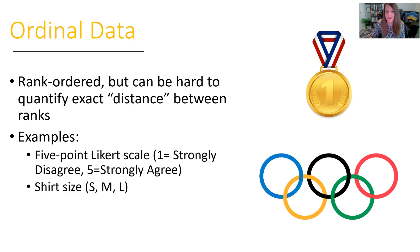Next, we have ordinal data. These are things that are rank-ordered, but it can be hard to sometimes quantify exactly perfect and consistent distance between the different ranks. A classic example here is a Likert scale - those surveys that go from strongly disagree to strongly agree, or even shirt sizes. In some cases, the difference between small and medium and medium and large might not be exactly the same, but they're ordered in terms of sizes.